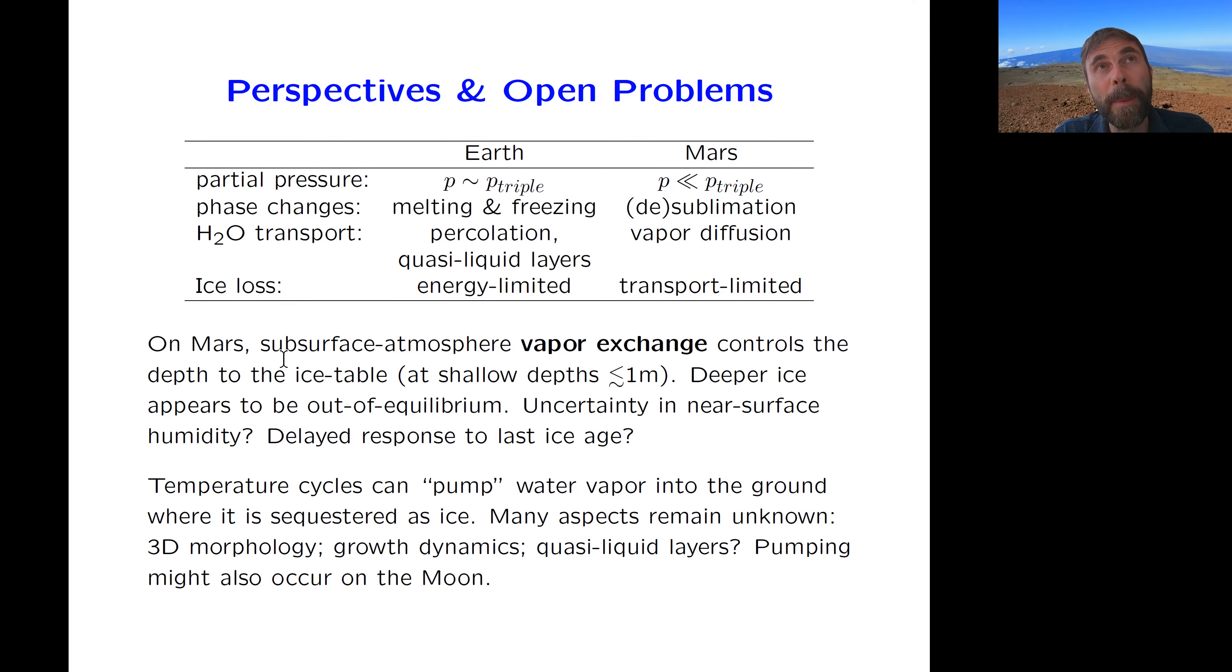Now, here at the top, this is an overall general comparison between Earth and Mars, or terrestrial permafrost environments and Mars environments. But even so, it highlights some important differences, particularly the partial pressure of H2O on Mars, which is orders of magnitude lower than the triple-point pressure. Well, on Earth, it's comparable or often very often above the triple-point.